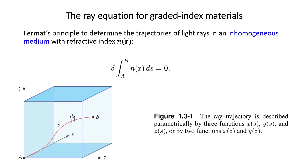Look at the figure below. Here we have two points a and b, and light travels between a and b. Here, n is a function of r, or the position. For this case, Fermat's Principle is defined as: delta of the integral from a to b of n as a function of r, ds, equals zero.